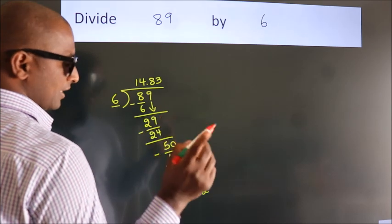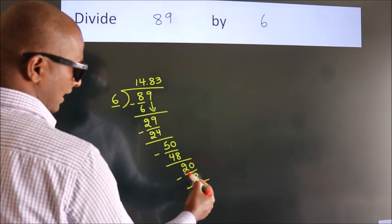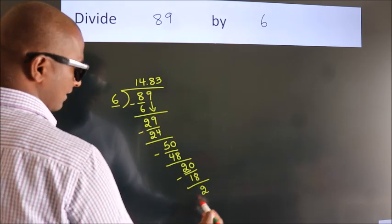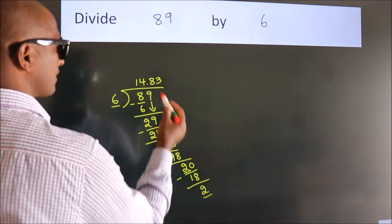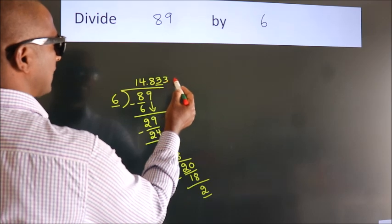Now observe: we had 2 here, and we got 2 again. That means this number keeps on repeating.